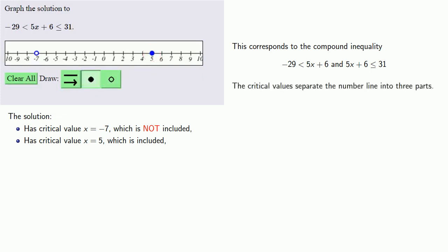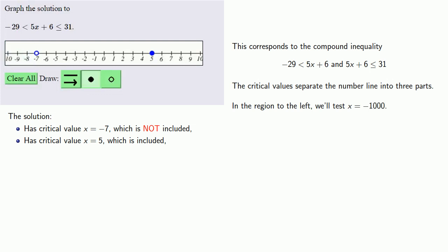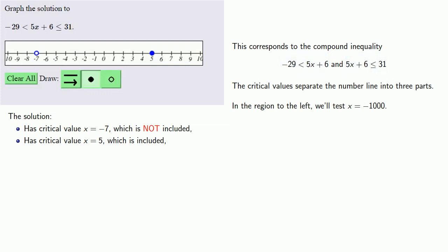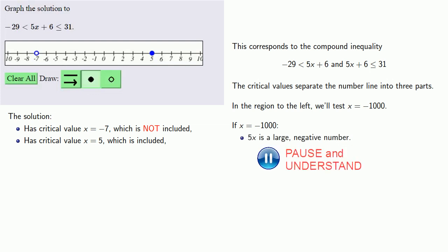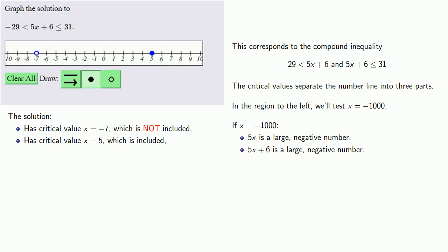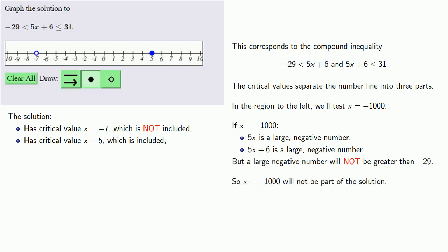Now we see that the critical values separate the number line into three parts. In the region to the left, we'll test x equals minus 1,000. We need to see if x equals minus 1,000 satisfies this compound inequality, and since this is an and inequality, we have to satisfy both. If x equals minus 1,000, then 5x is a large negative number, and 5x plus 6 is still a large negative number. A large negative number will not be greater than minus 29, so x equals minus 1,000 is not part of the solution, and we exclude the region to the left.